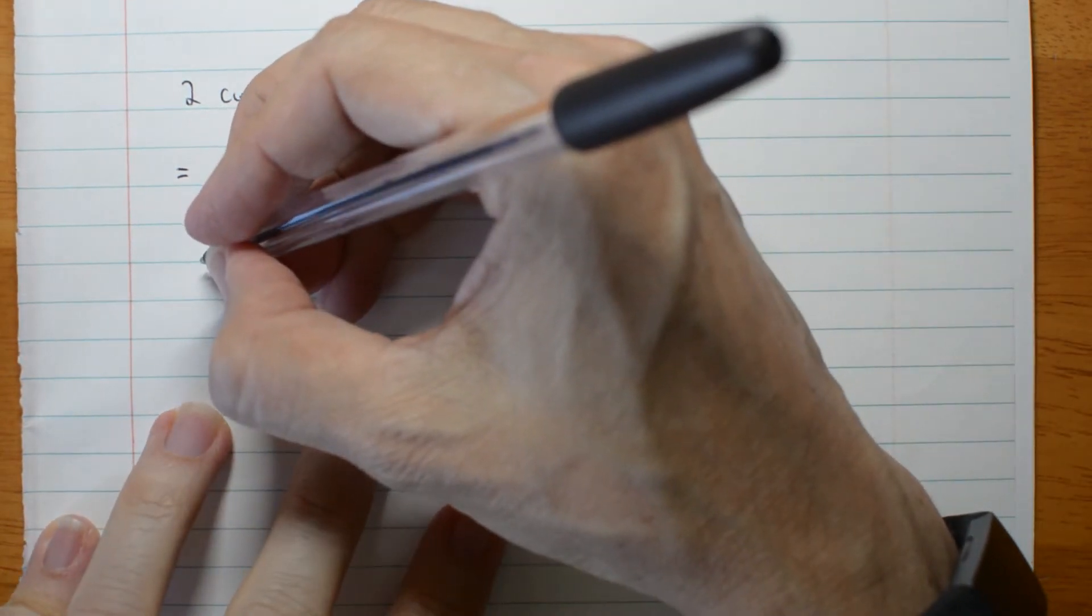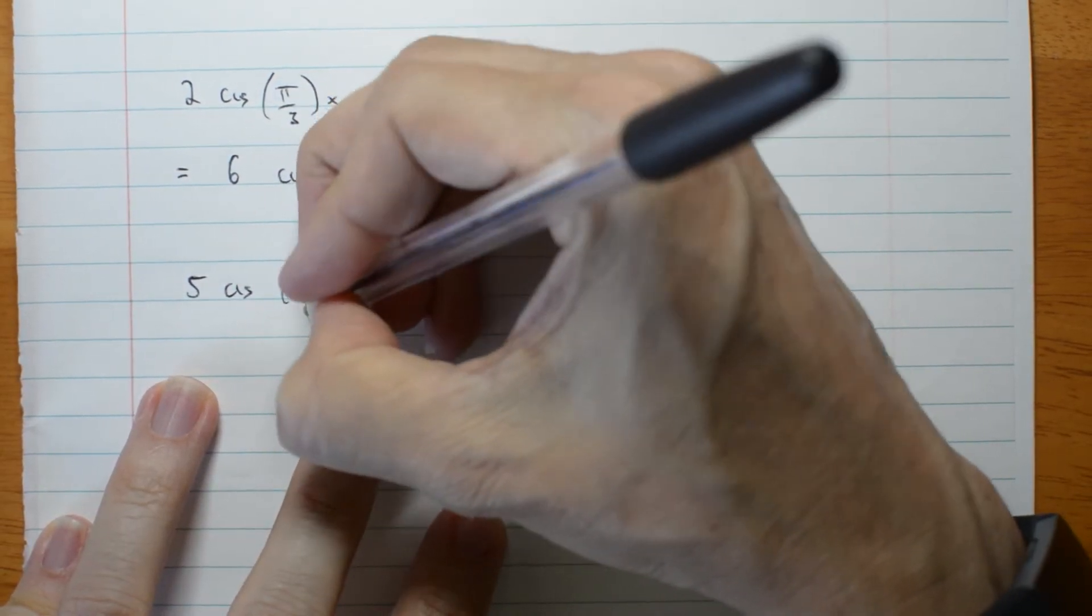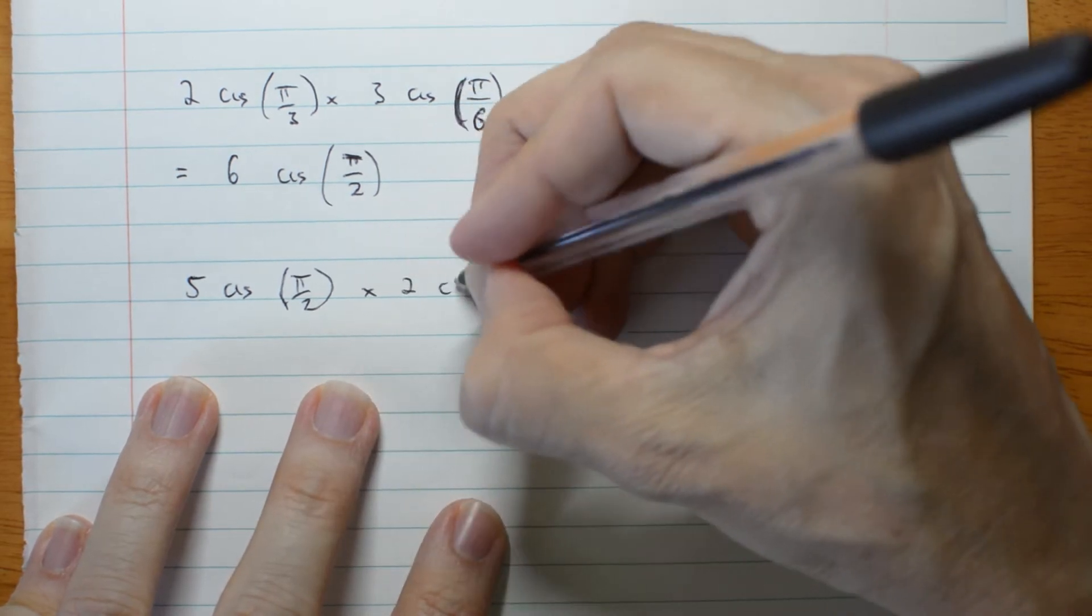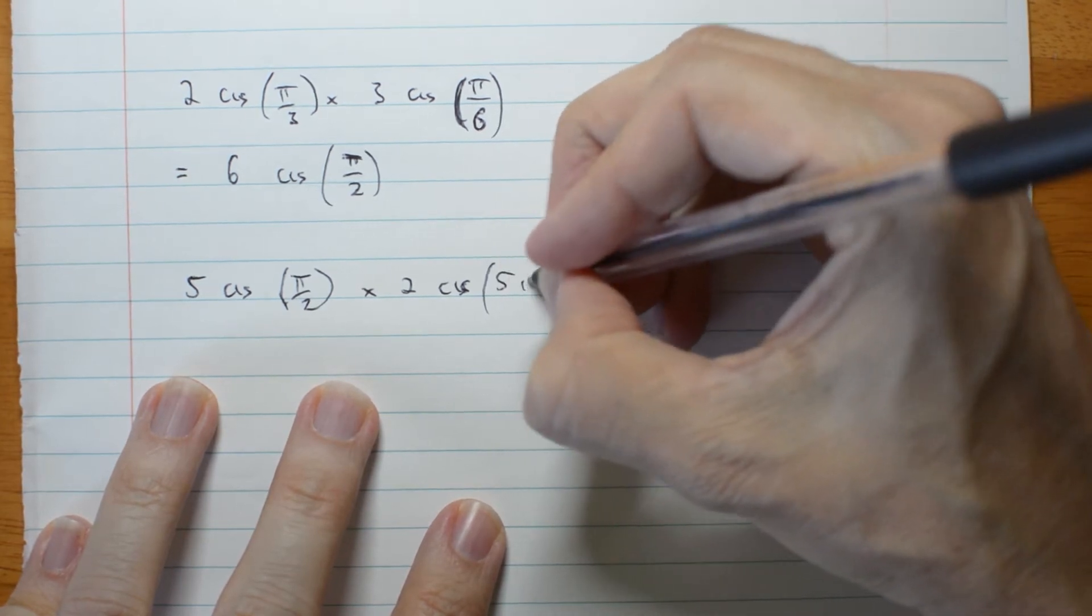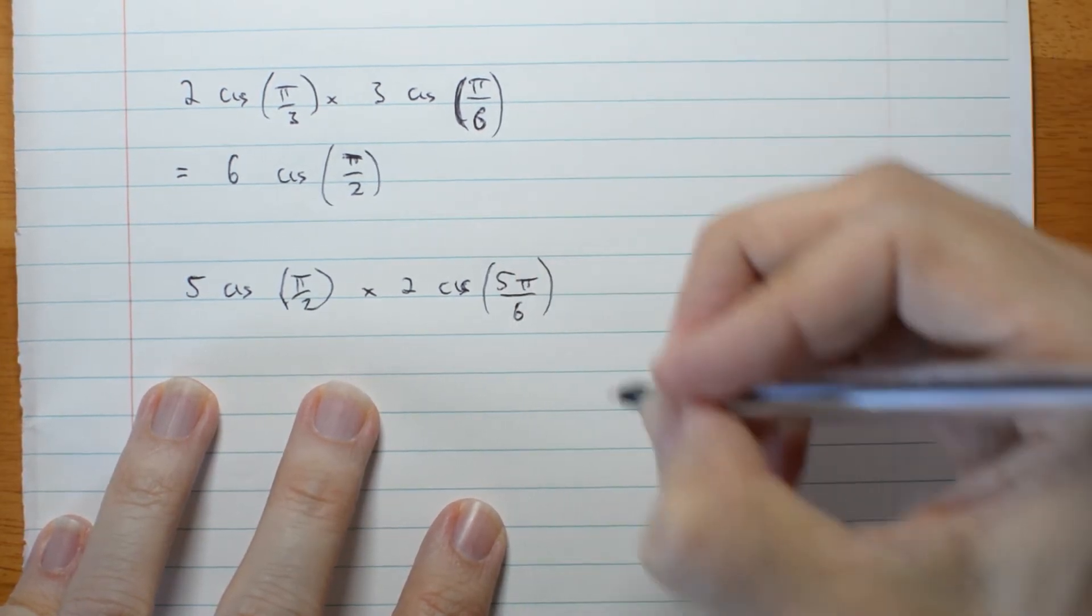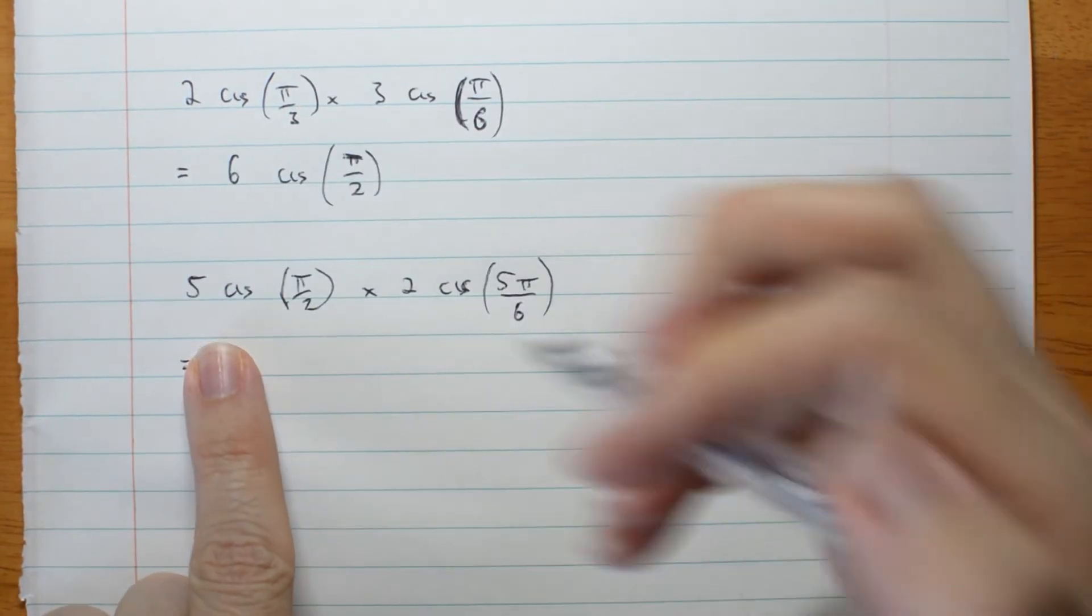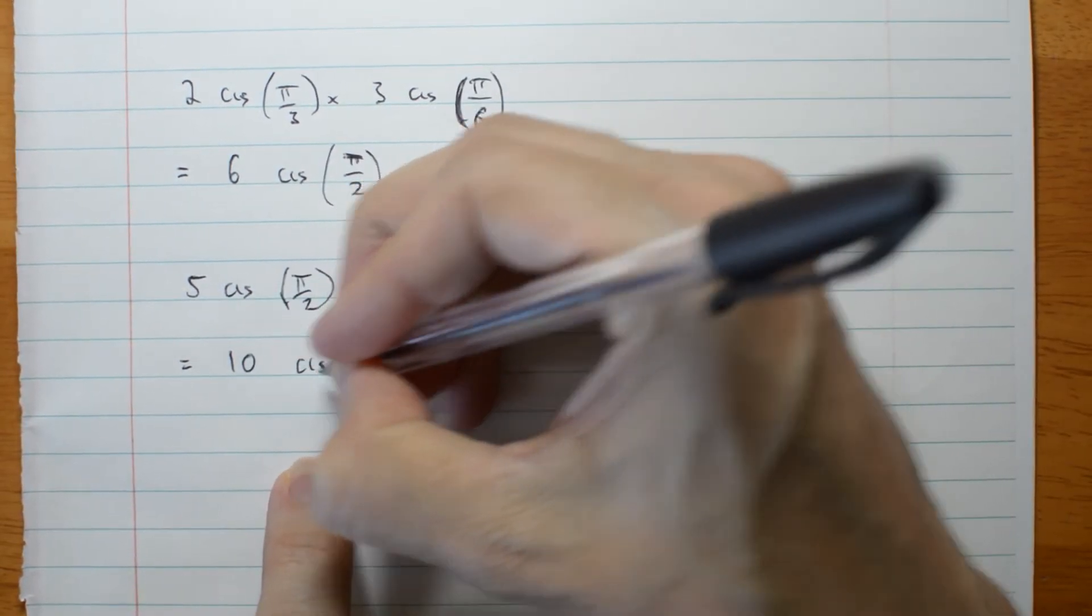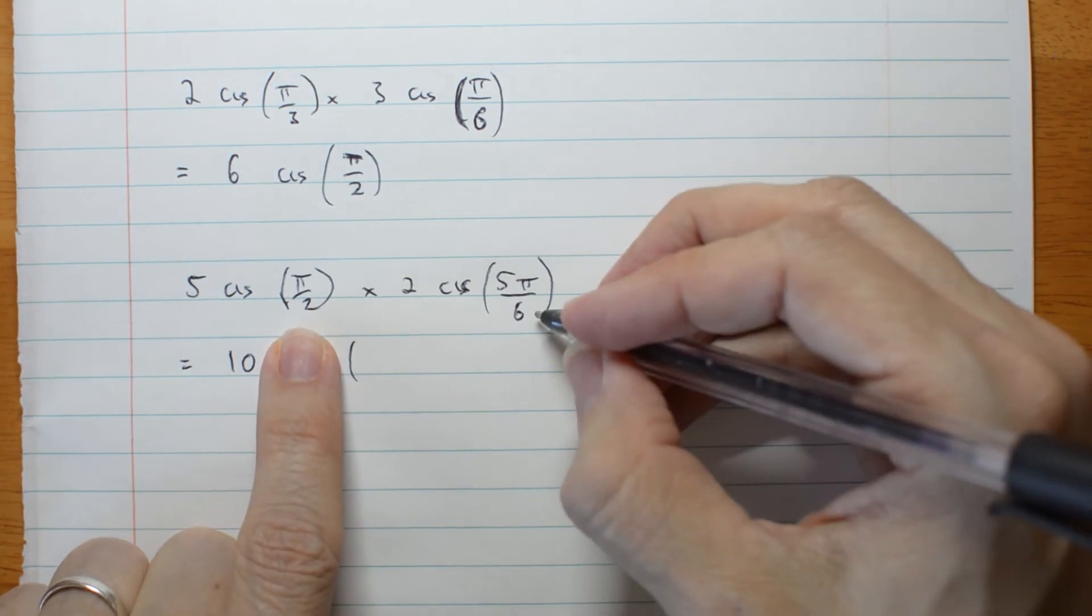Let's try another one. 5 cis π/2 times 2 cis 5π/6. OK, multiply the two moduli, and add the two arguments. π/2 plus 5π/6.